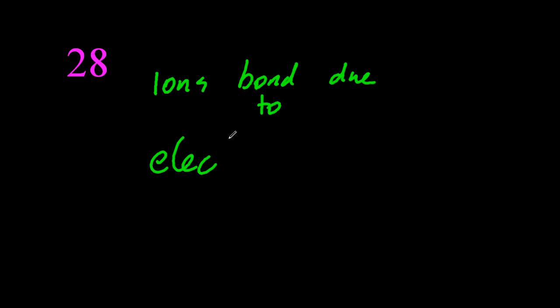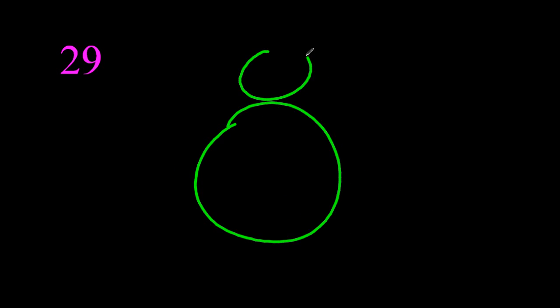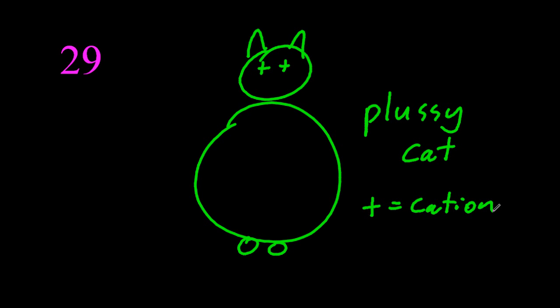Ionic bonds are due to electrostatic attraction, all bonds are due to electrostatic attraction, it's plus attracting minus. Cation, anion, well just remember plusy cat, the plus one is the cation.